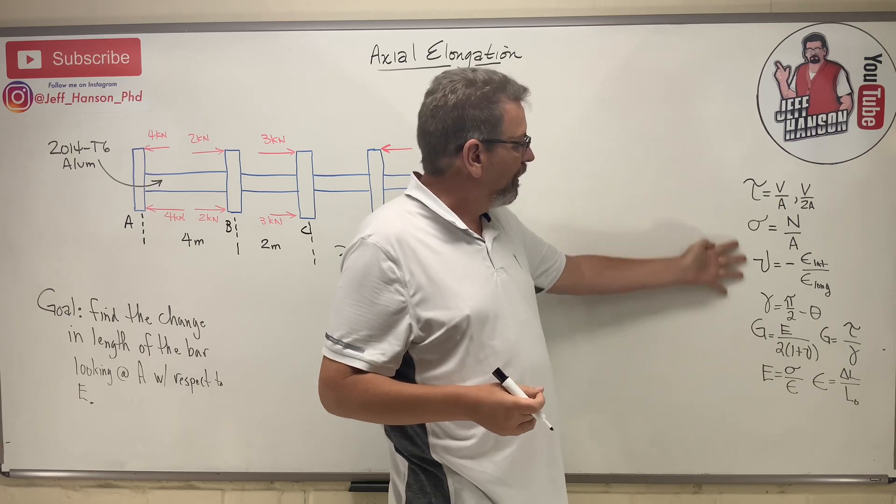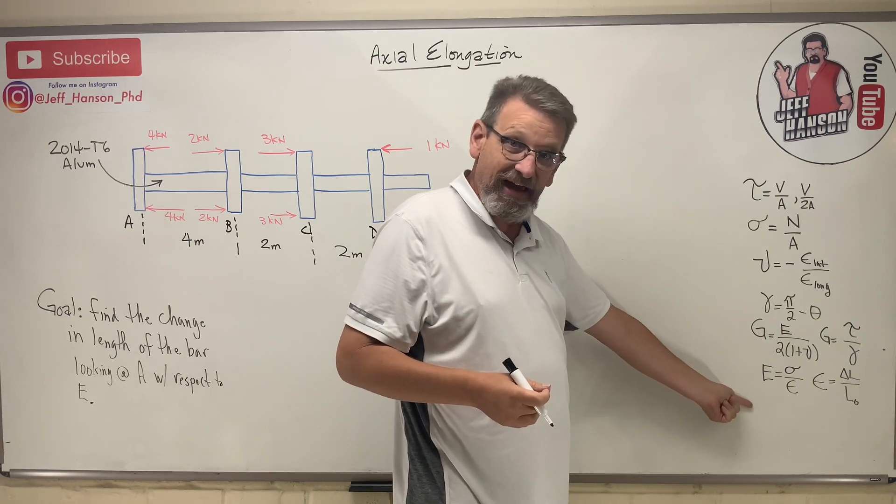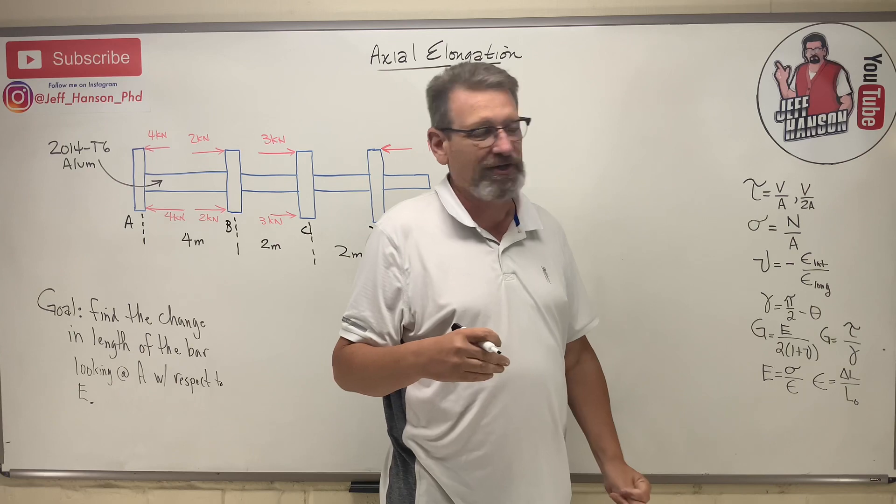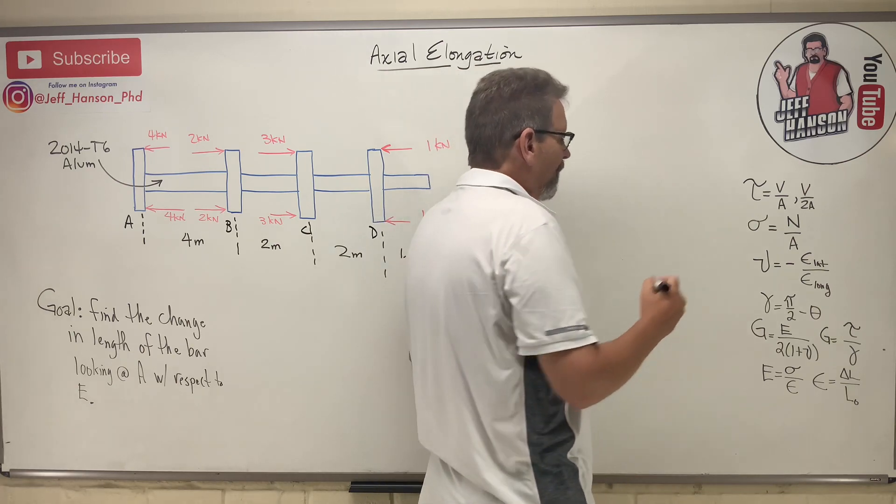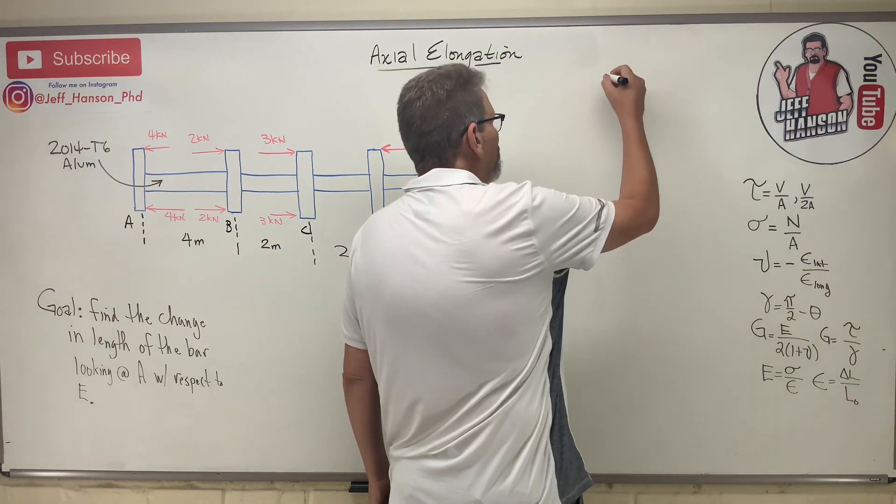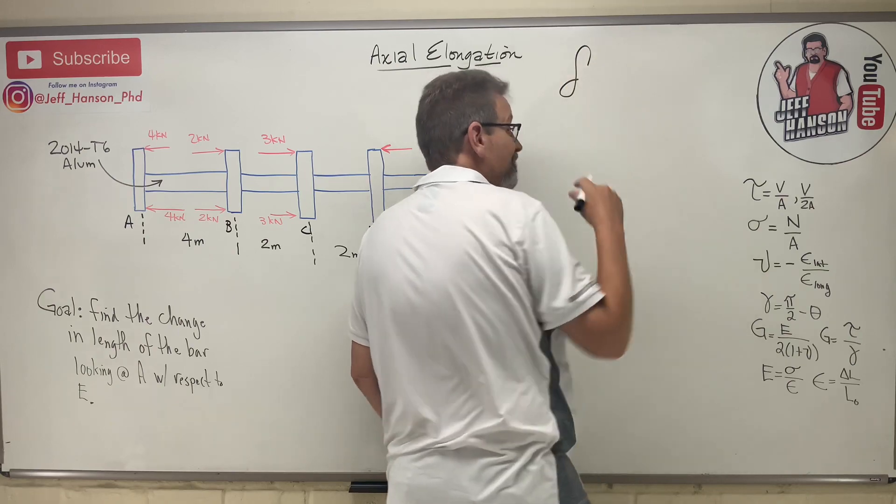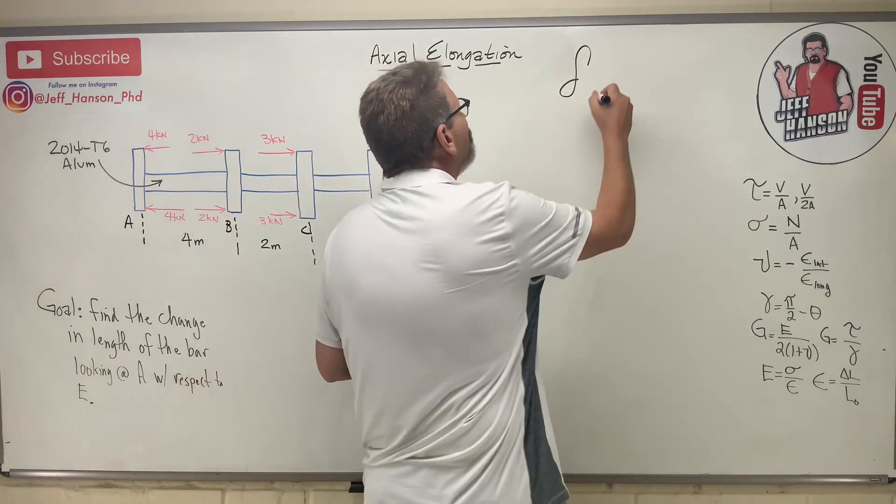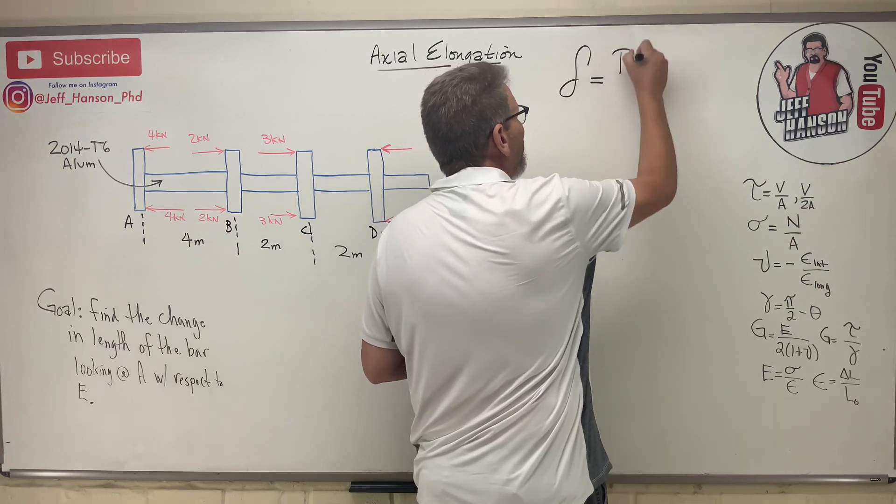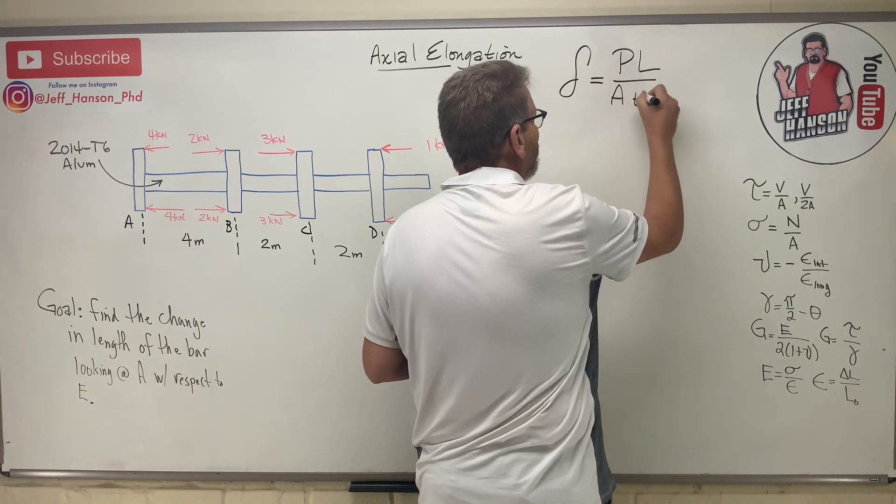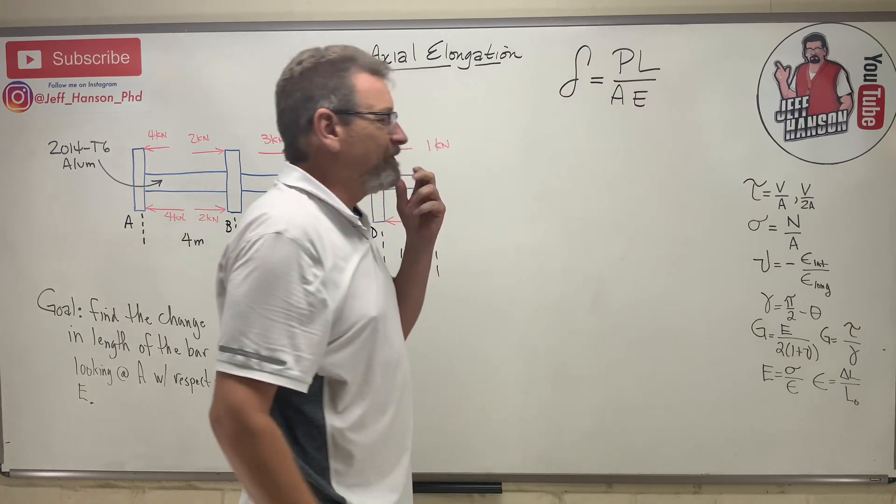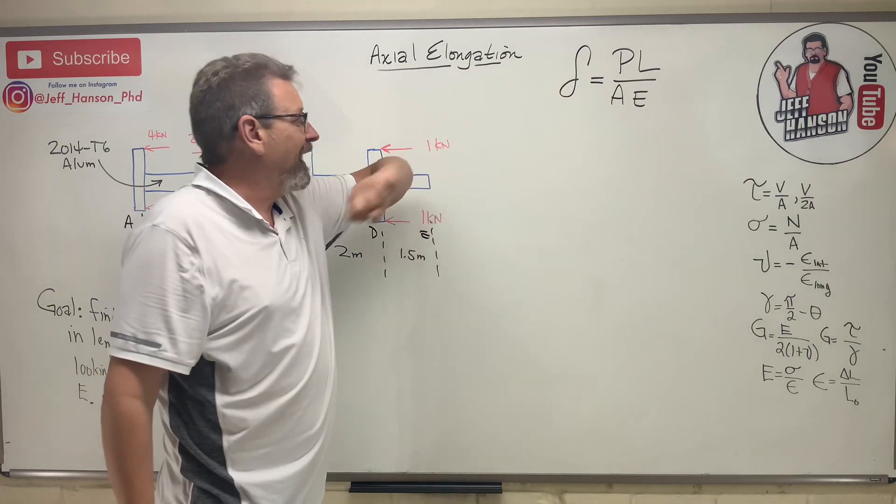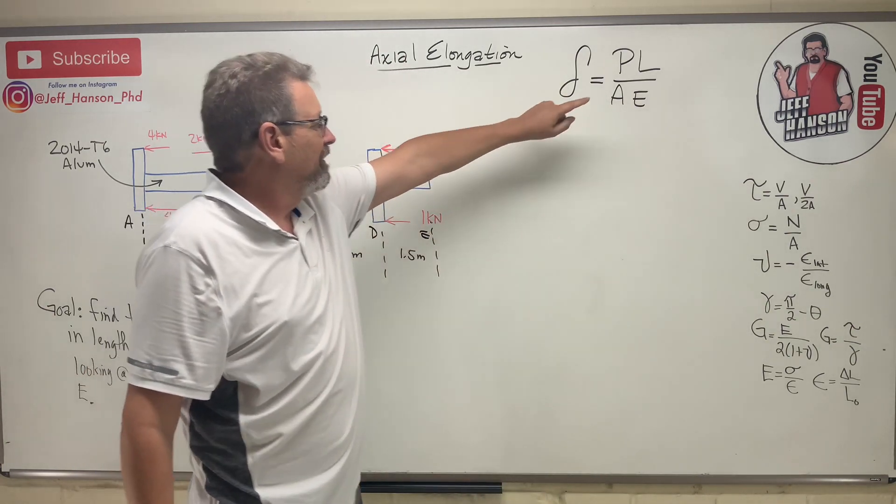Over here I have a list of all the equations we've talked about so far. Today we're going to add another equation - the equation of the day. It goes like this: Delta, which is the change in length, equals PL over AE.